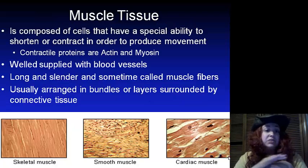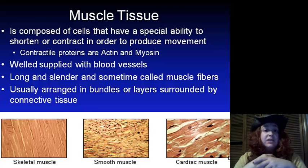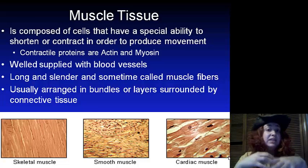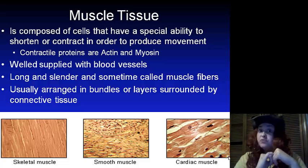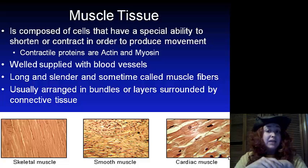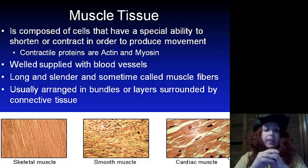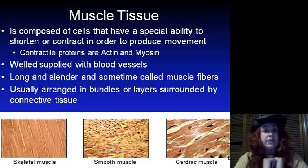Muscle tissue is composed of specialized cells that have the ability to shorten and contract in order to produce movement. They are well supplied with blood vessels, are long and slender — sometimes called muscle fibers — and are usually arranged in bundles or layers with connective tissue around them.